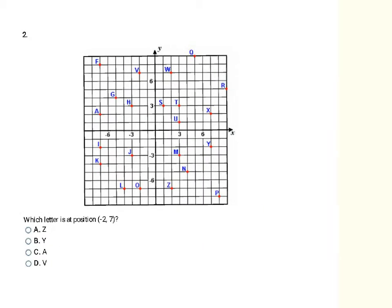This question puts it in coordinate form. The first coordinate is negative 2, which is always my x-coordinate, so I go on the x-axis to negative 2. My second number is the y-coordinate — it's positive 7, so I go up 7. Counting up 1, 2, 3, 4, 5, 6, 7 puts me right at point V. So that's going to be my final answer, which is choice D.